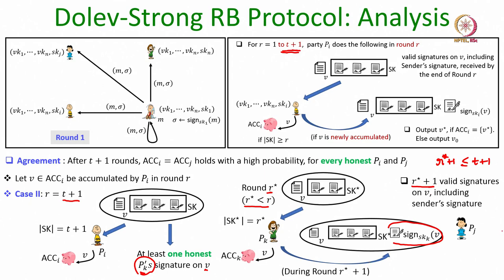That means even if pi accumulates v during the last round, every other honest party would have already accumulated that value. Among the signers of v, at least one is guaranteed to be honest — who genuinely signed because of unforgeability — and since that honest party signed and forwarded v in an earlier round, every other honest party would have received and accumulated v. So the accumulative set of every pair of honest parties will be the same at the end of round t plus 1.